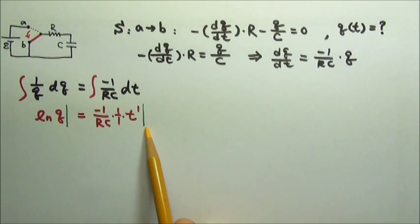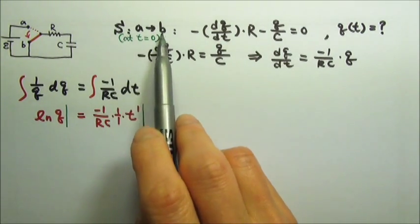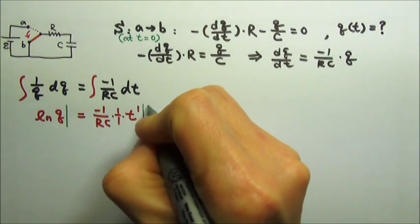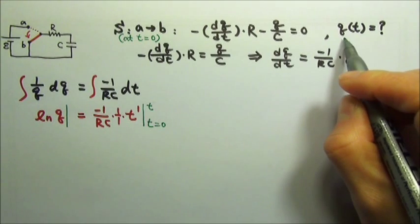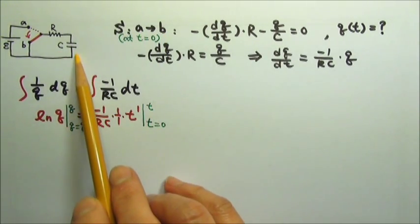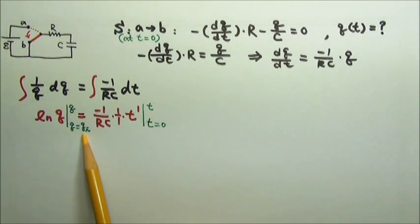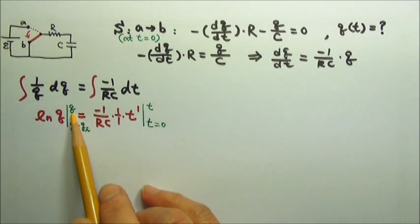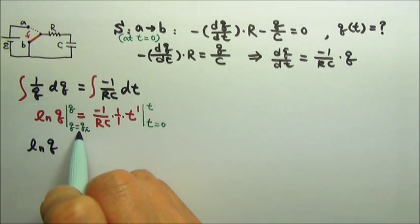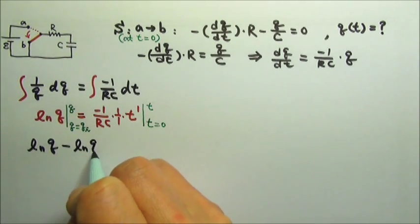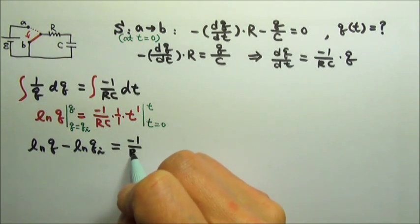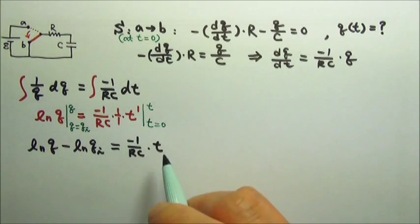We should put in the bounds or limits for the integration. Let's say the switch goes from a to b at t equals 0, so we start at t equals 0 and go to any moment t, because we want the charge at any moment t. At the moment the switch goes from a to b, the capacitor carries an initial charge qi. At moment t, the charge is q. Plugging in the upper bound gives natural log q, minus the lower bound natural log q-initial. On the other side, plugging in the upper bound gives negative 1 over rc times t, and the lower bound gives 0.